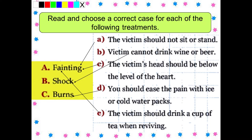Now here's the key. Trường hợp fainting: ta có 3 đáp án là câu A, câu C và câu E. Khi gặp trường hợp bị ngất: nạn nhân không nên ngồi hoặc đứng, đầu của nạn nhân nên được đặt dưới mức của tim, và khi nạn nhân tỉnh dậy thì nên được uống một tách trà. Trường hợp shock: ta chọn đáp án B — nạn nhân không được uống rượu hoặc bia. Trường hợp burns: ta chọn đáp án D — bạn nên làm giảm cơn đau bằng túi chườm nước đá hoặc túi chườm nước lạnh. Các bạn check đáp án và ghi chú vào tập.